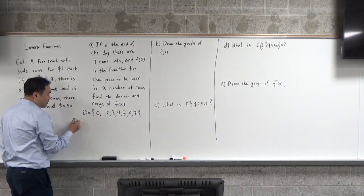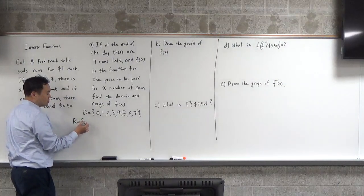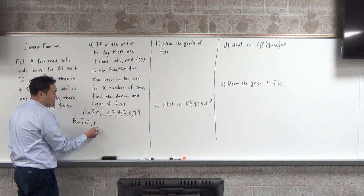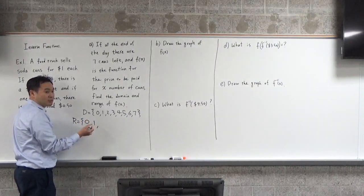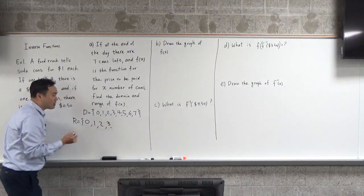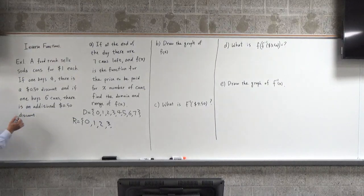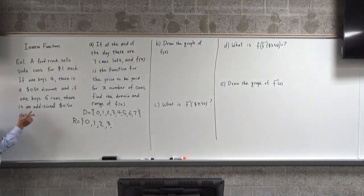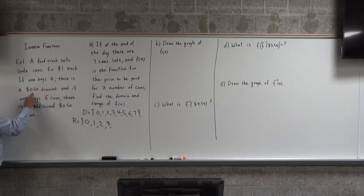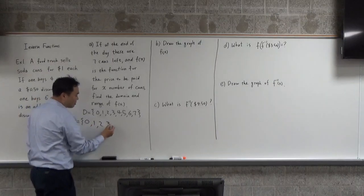What about the range? If you buy 0, the price is 0. If you buy 1 can, it's $1. 2 cans, $2. 3 cans, $3. But if you buy 4, instead of charging $4, there's a 50 cent discount, so it's $3.50.